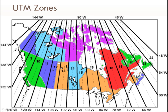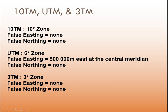Looking at Canadian provinces: Alberta spans UTM zones 11 and 12, Saskatchewan uses zones 12 and 13, and British Columbia includes parts of zone 10 as well as zone 11.